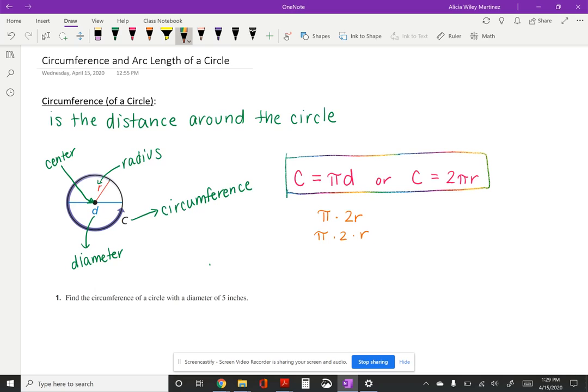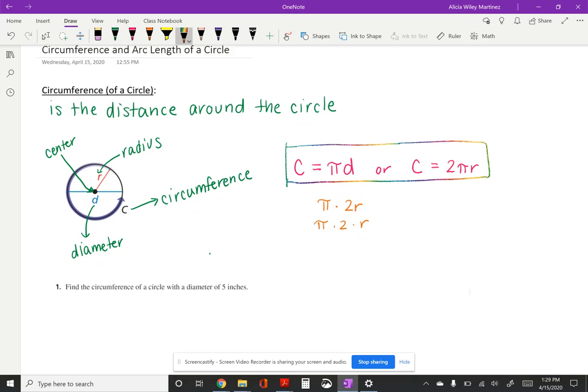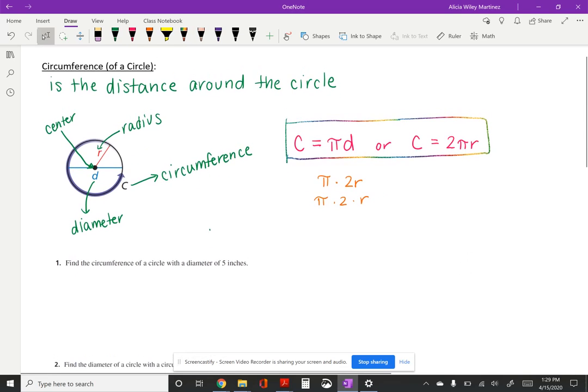Okay so now we're going to do an example here. In number one it says find the circumference of a circle with a diameter of 5 inches. So if they give you the diameter you're going to want to refer to this formula here. So we're going to do C equals π times D. If you needed the radius well you could just take the diameter and cut it in half. So since we know the diameter in place of D we are going to put a 5.